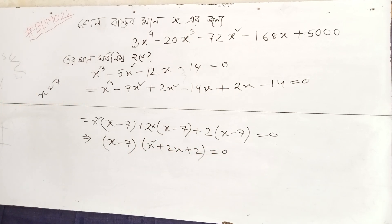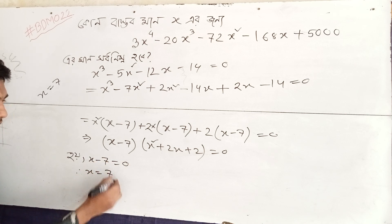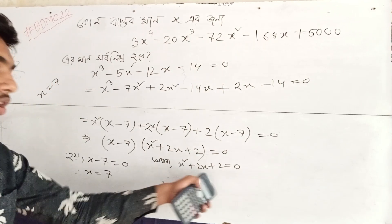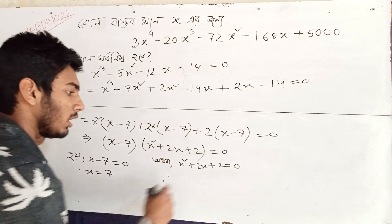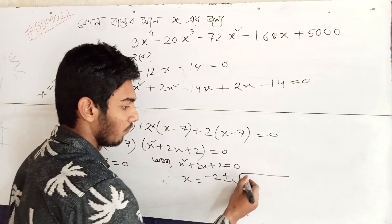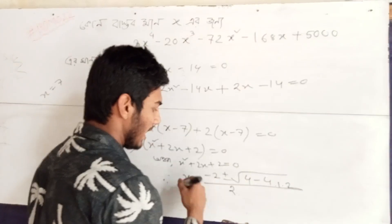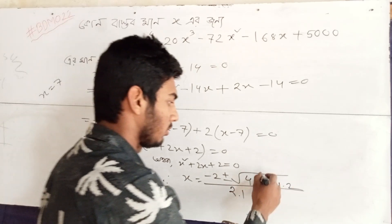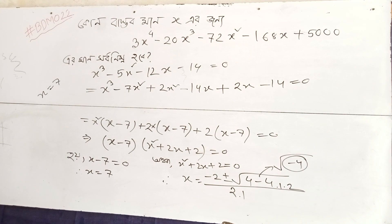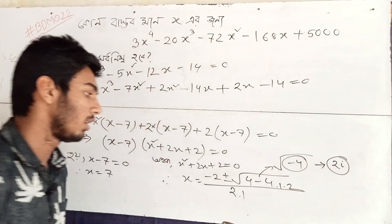So we get (x minus 7)(x² plus 2x plus 2) equals 0. Therefore x minus 7 equals 0 gives x equals 7. For x² plus 2x plus 2 equals 0, using the quadratic formula, the discriminant is 4 minus 8, which is minus 4, giving imaginary roots — 2i — meaning x is a complex imaginary number.